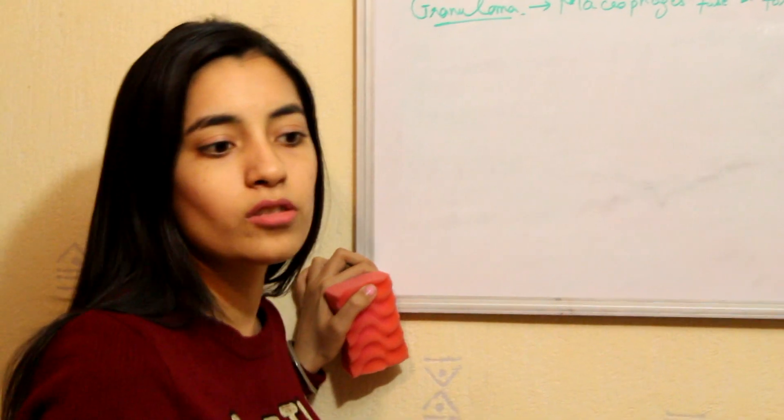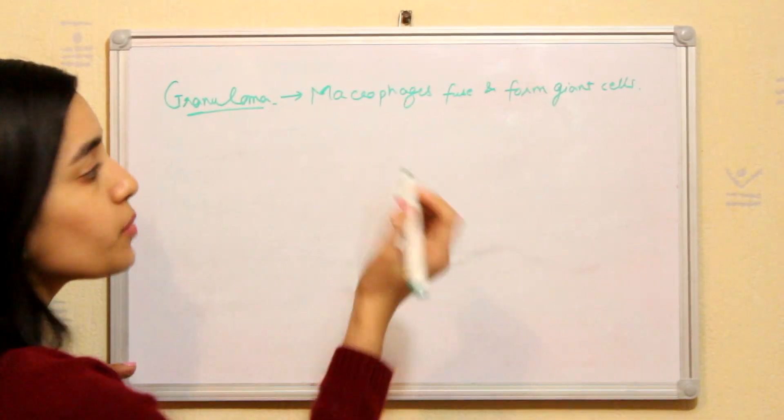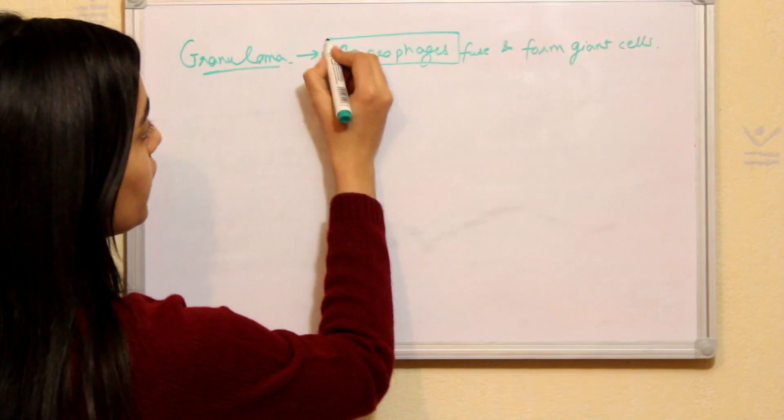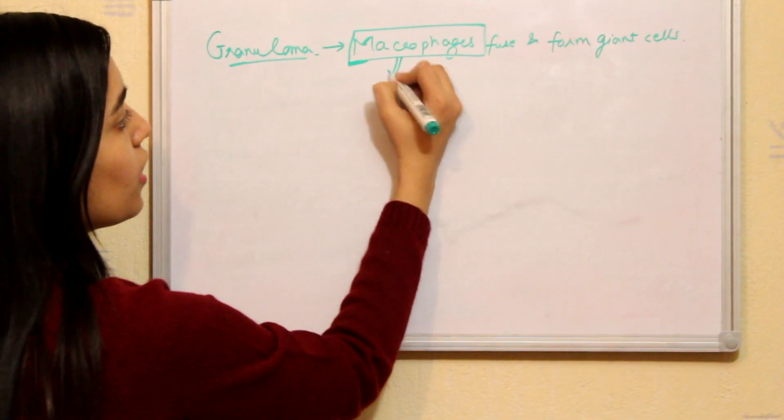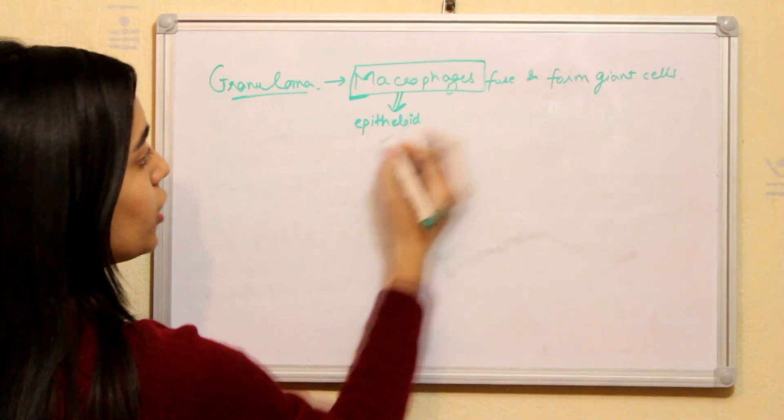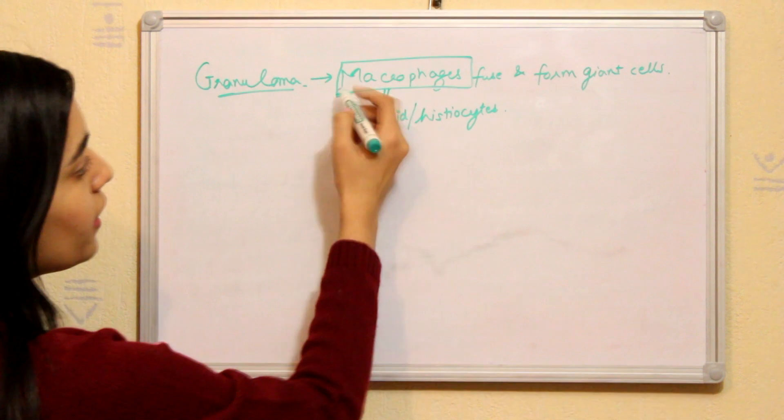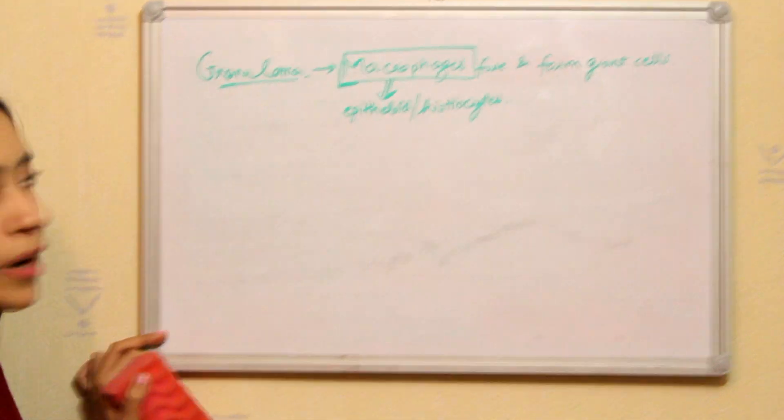So basically granuloma is also, in some books, macrophages in relation to granuloma is also referred to as epithelioid or histiocytes. But those are all the words for macrophages.